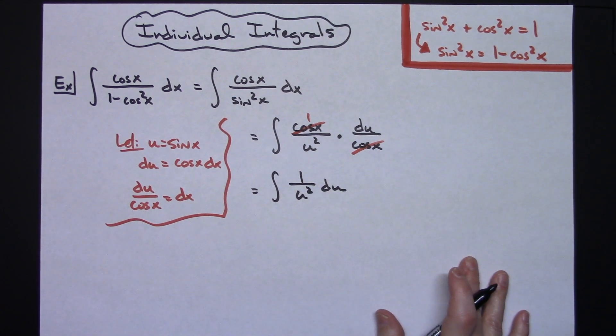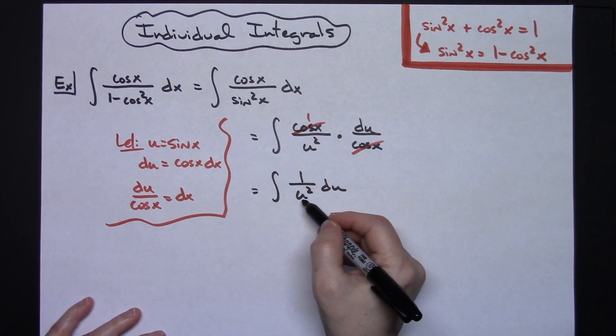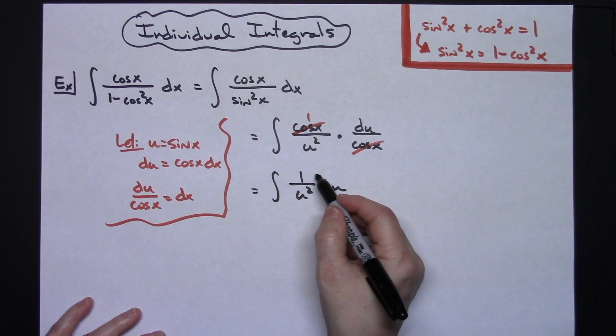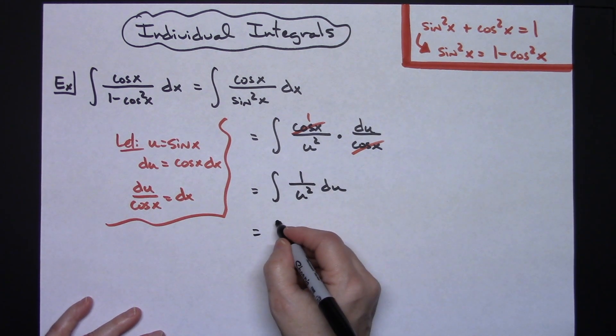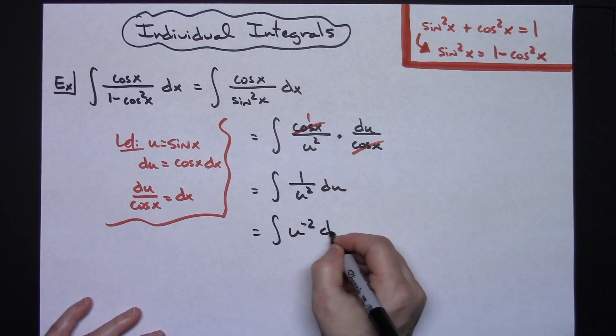I'm now all in terms of u so I can take this, use my laws of exponents, move it upward. So I'll have the integral of u to the negative 2 du.